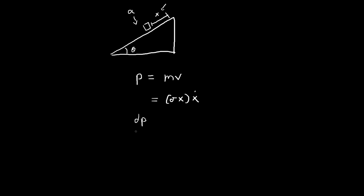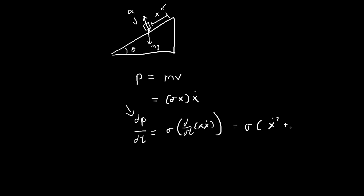Taking the derivative of both sides, this is going to equal the net force applied to the dustpan. In this case, the only forces are gravity and the normal force from the incline. The component of gravity normal to the incline is cancelled out by the normal force, so the net force acting on the dustpan is pointing downwards along the slope.